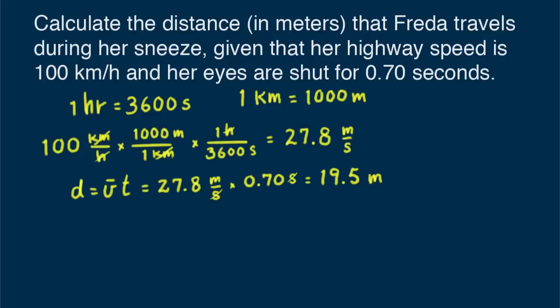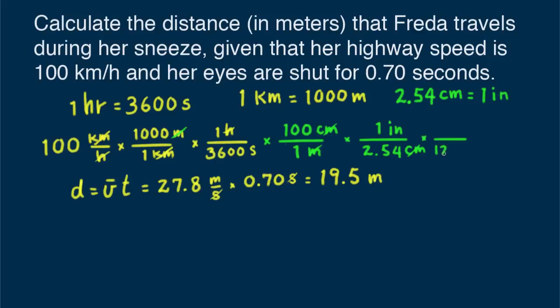Unit conversion is a powerful tool. Suppose our problem asked for the distance traveled in feet instead of meters. Let's suppose the conversion factor we know is that two point five four centimeters equal one inch. Then we'd modify our conversion a bit. We'd add one hundred centimeters over one meter, one inch divided by two point five four centimeters times one foot over twelve inches. And using our calculator we get ninety-one feet per second. So the distance traveled in feet is ninety-one feet per second times zero point seven zero seconds equals sixty-three point eight feet.